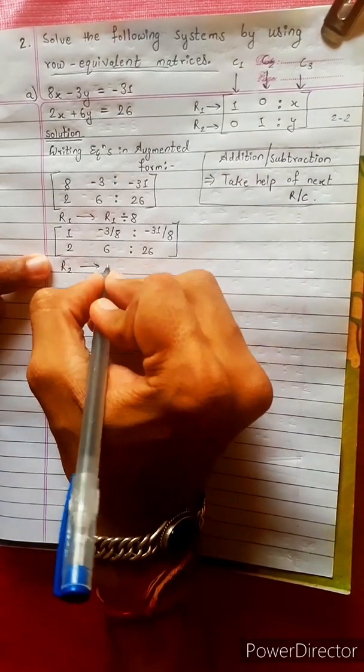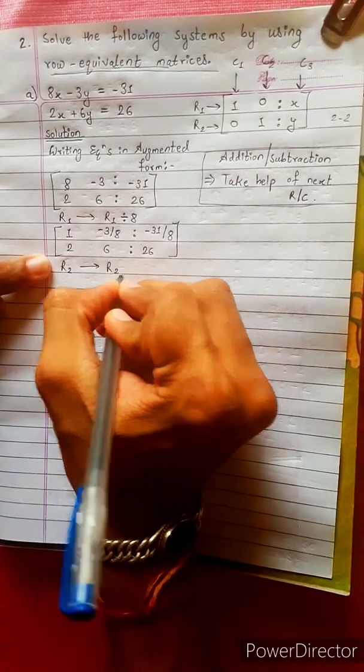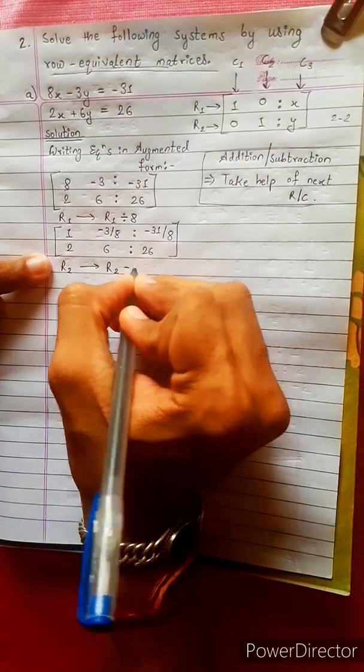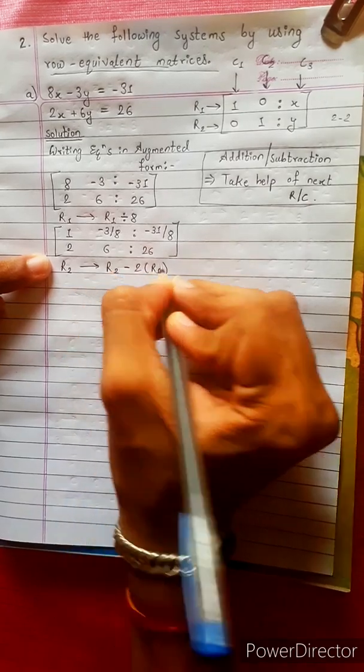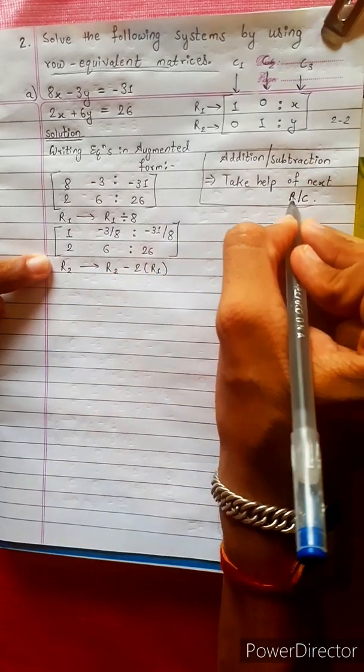R2 is changed. R2 is changed. Coming to the same — this reduces the row.